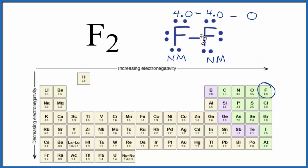That means the electrons in this bond — the ones that are shared — will be shared equally. So that makes F2 a covalent compound.